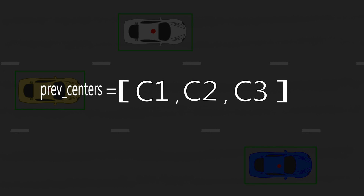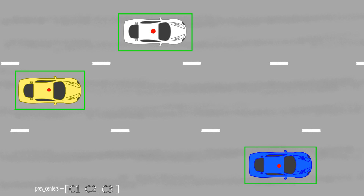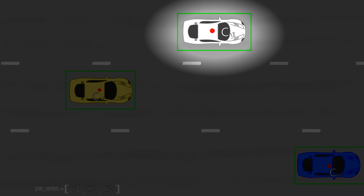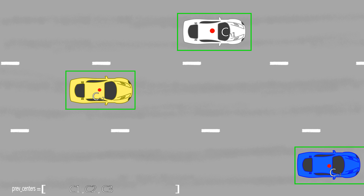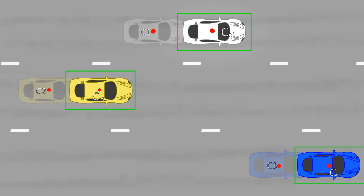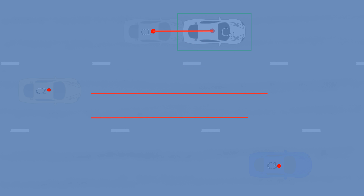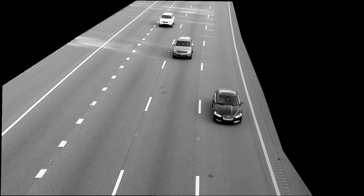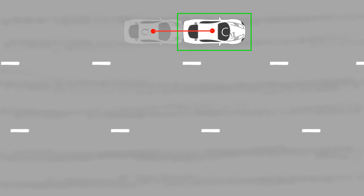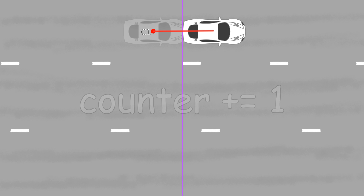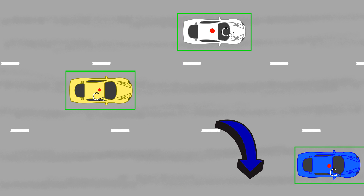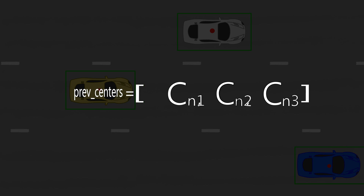The script stores the centers in pixel coordinates in a list to be used for the next frame. A new frame from the video feed is read and all the contours are detected again. We cycle through each contour in the frame and compare its center distance to the previous frame centers. The Euclidean distance to each of the previous centers is computed. We compare all the distances and find the shortest one. The assumption is that a vehicle won't travel too far frame to frame, and therefore the closest one is assumed to be the same object. Once we determine which of the previous centers belong to the current object, the script checks if the counting line falls in between the two points. If it does, the counter is increased. Finally, the current centers are saved to the list for the next frame and the process repeats.